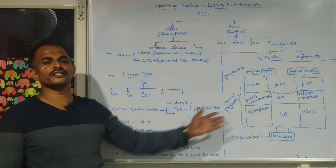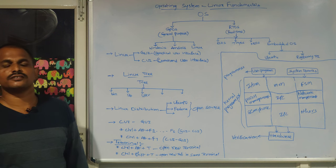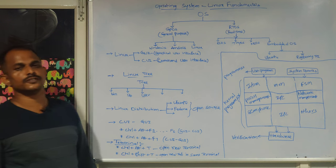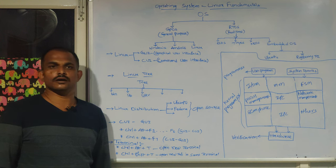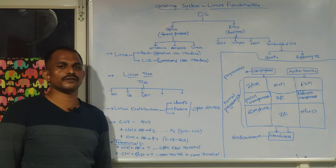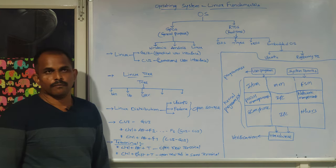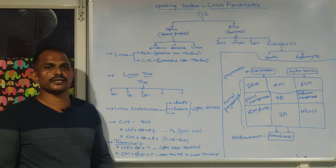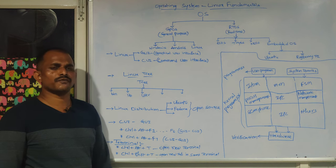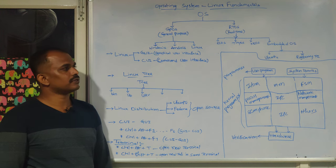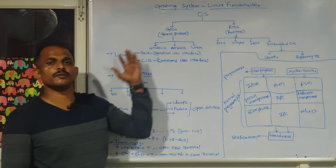I want to give you a brief overview of operating system fundamentals. There are two different types of operating systems generally in use: general purpose operating systems, which are mostly used in computers, mobile phones, and gadgets; and real-time operating systems, which you find in washing machines, refrigerators, or specific embedded applications.